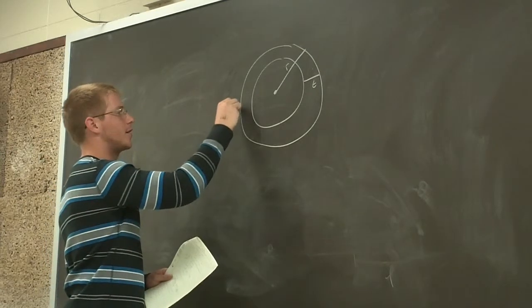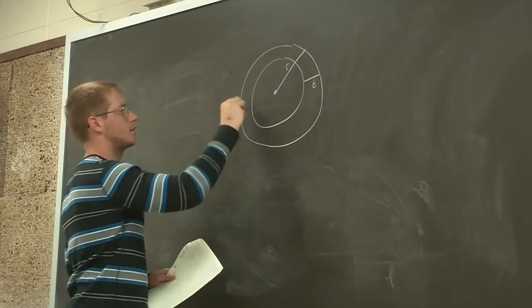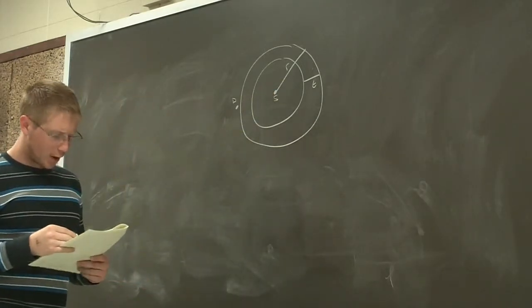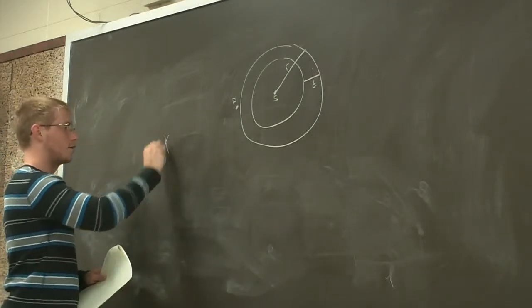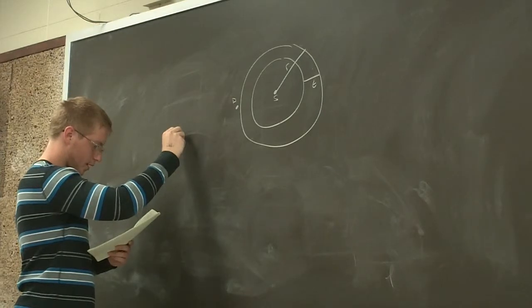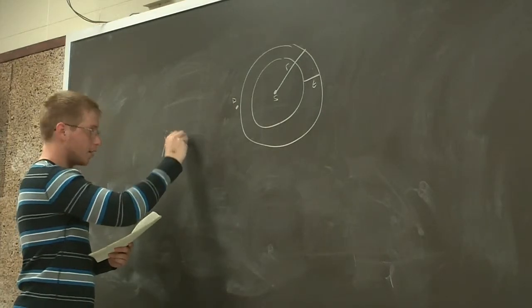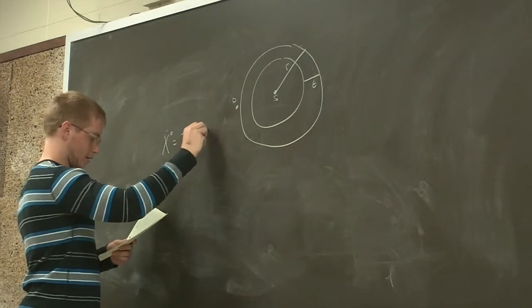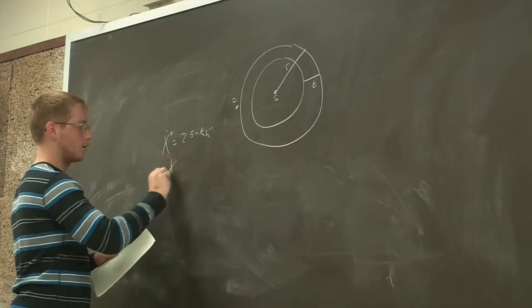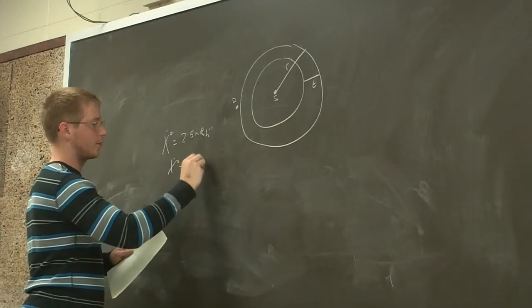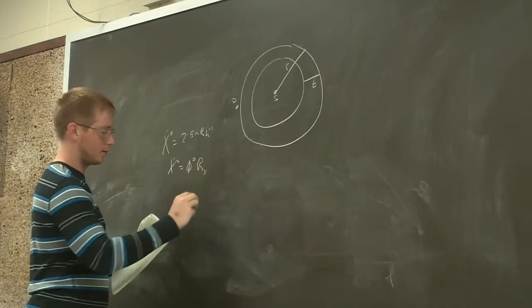And we have some detector out here, D. This is our source. So we have a constraint. Our constraint is that the exposure rate cannot be more than 2.5 mR per hour. Well, exposure rate is equal to the flux times the response of the exposure rate.